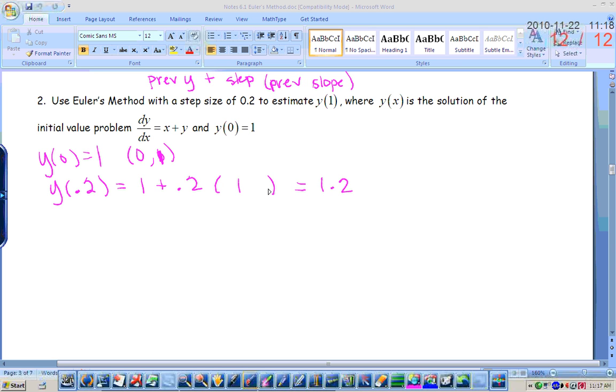Alright, now, after you find, alright, now, also, I always forget this. Does y of 0.2 actually equal 1.2, or is this an estimate? It's an estimate. So y of 0.2 is approximately, so you need to use the squiggly lines. Now, I can put an equal sign between 1 plus 0.2 times 1 and 1.2, because those two things equal each other. Alright, I also think it's helpful to write the point that you've just found out to the side.